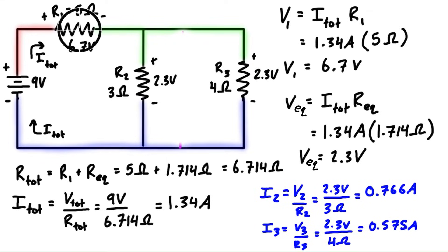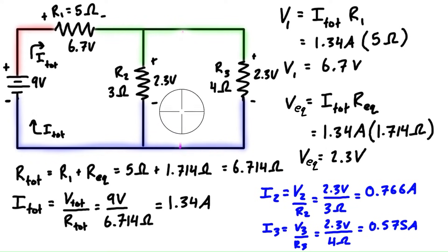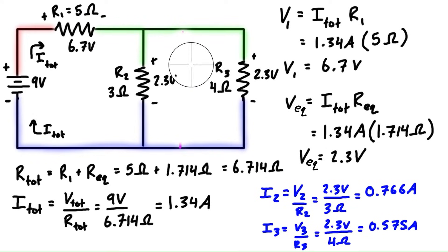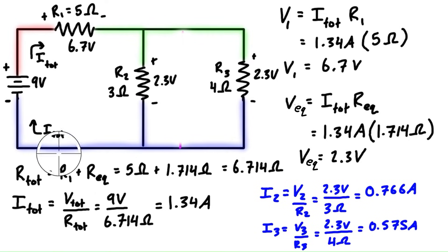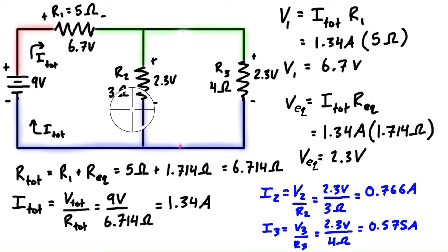You'll notice if you add 0.766 plus 0.575, that equals 1.34. So we have 1.34 amps flowing into the green node and then a total of 1.34 amps flowing out. Same with the blue node — 1.34 amps flowing in, split between the two resistors, and then 1.34 flowing out. That is Kirchhoff's current law, stating that the current flowing in is equal to the current flowing out of nodes.